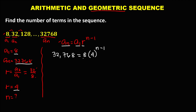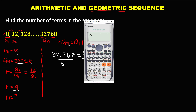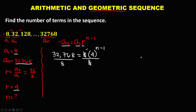To simplify, divide both sides by 8. So we can cancel the 8, and 32,768 divided by 8 equals 4,096. This gives us 4,096 equals 4 to the power n minus 1.